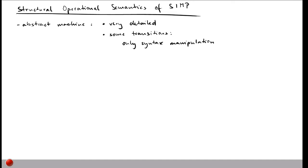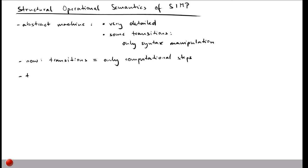What we now want to do instead is to focus on a way to define the semantics where every transition is actually a computational step. One benefit of this is that you can write down the semantics of a program with fewer transitions, because you only write down the actual computational steps. This style is called small step semantics.